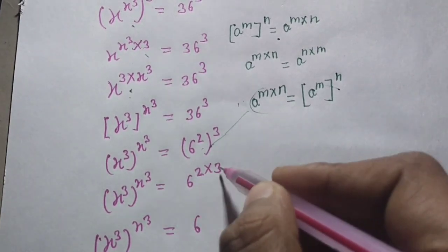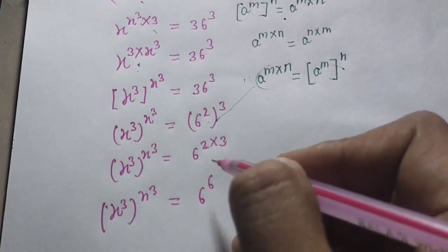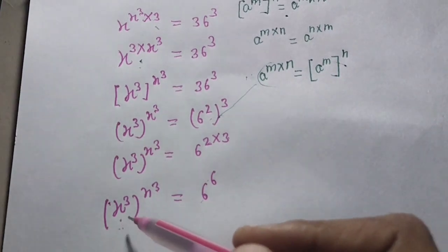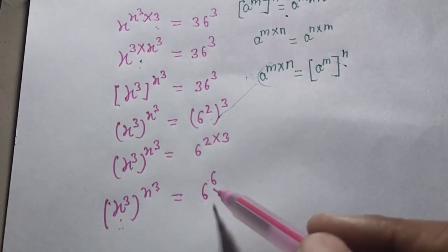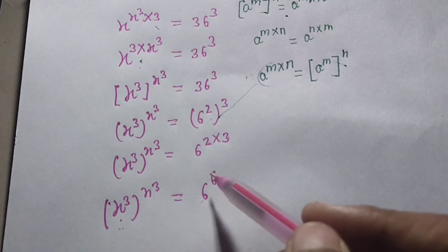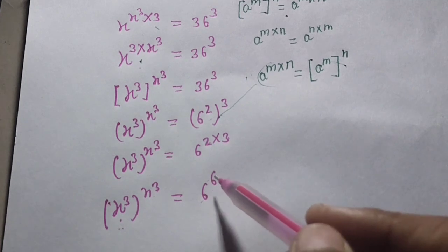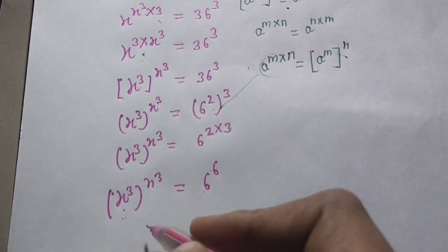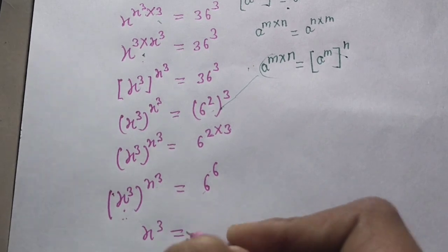So 2 times 3 gives 6. The base and power are the same on the left side and right side. So since base and power are the same on both sides, we can compare them directly.